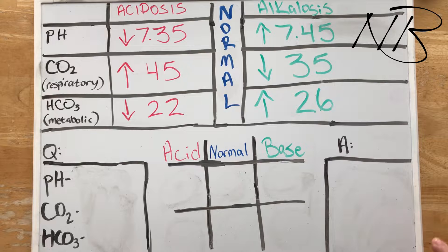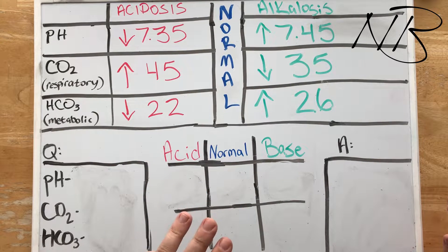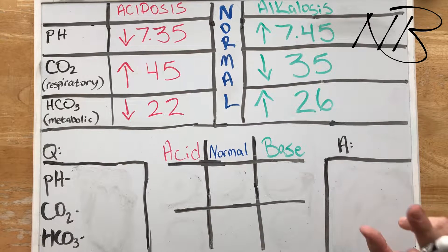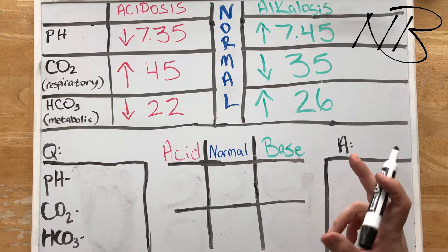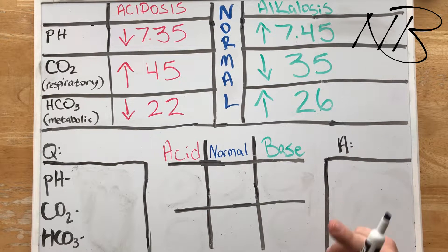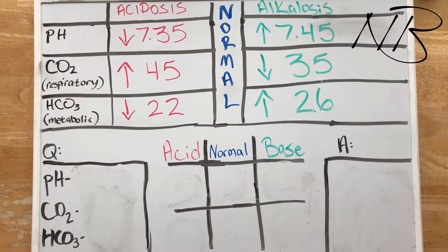This is the last trial by five — the third and final type of arterial blood gas question that you could be presented with on a test. It's one of the more tricky ones, but if you can stick with me and follow along, I think I'm going to be able to explain this in a way that'll bring clarity and help you crush those exam questions.